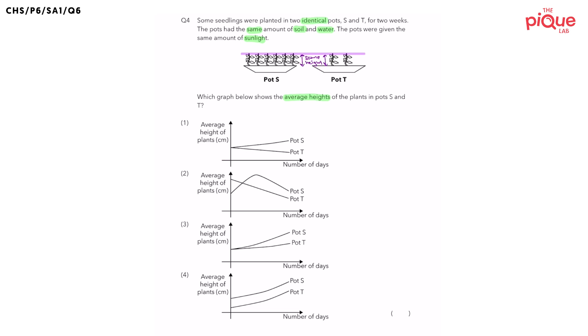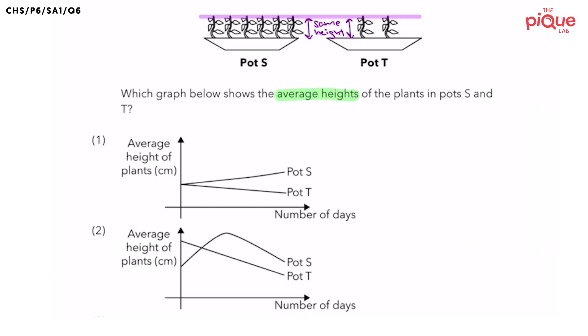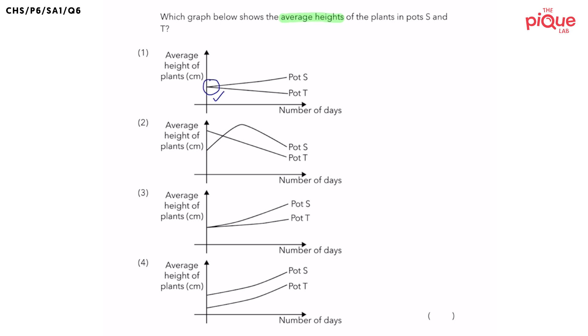So let's first take a look at option one. Is the average height of plants in pots S and T starting off at the same point? Yes, so that is what we want. And in which of the other graphs is the average height of plants also starting off at the same point? That would be option three.